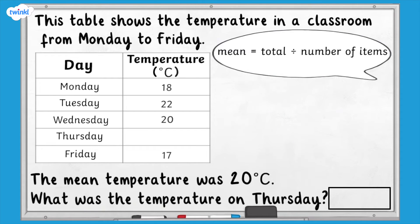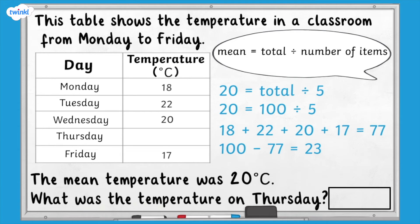We already know the mean and the number of items. If we put these numbers into the formula we can see that the total needs to be 100. The temperatures on the other days add up to 77. 100 subtract 77 equals 23. So the temperature on Thursday must have been 23 degrees.